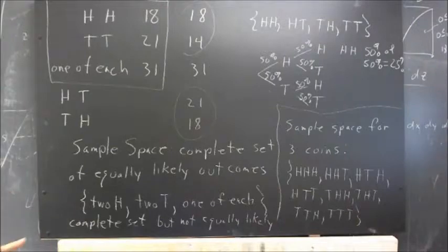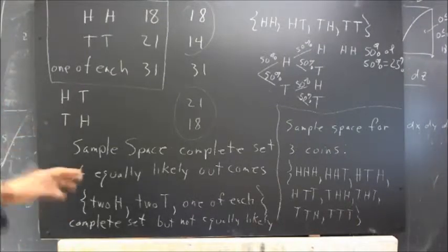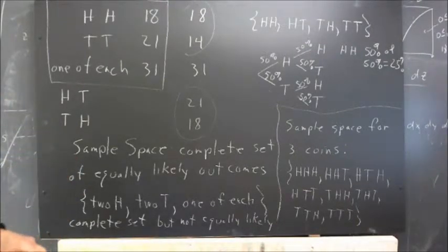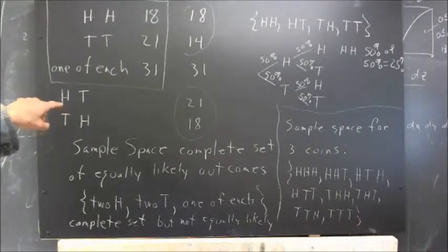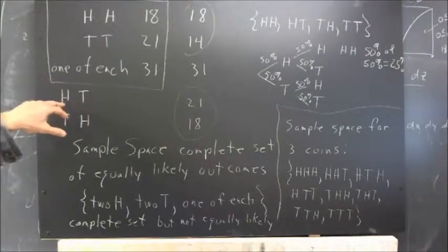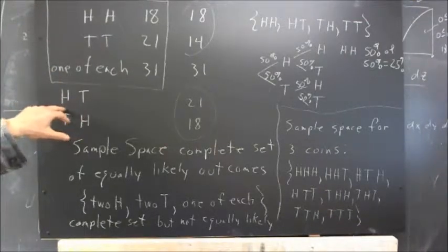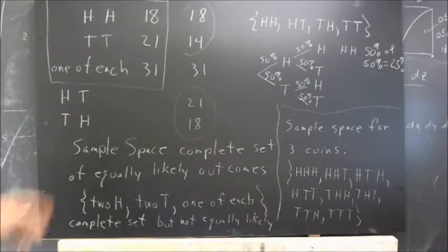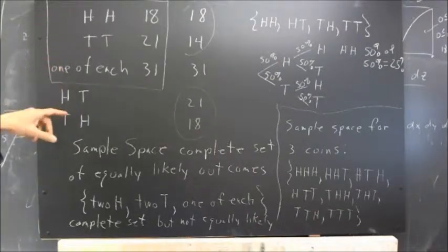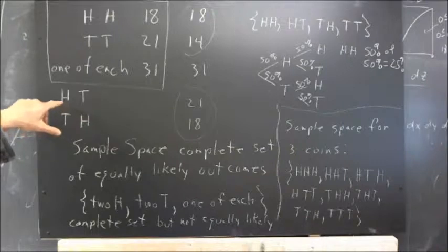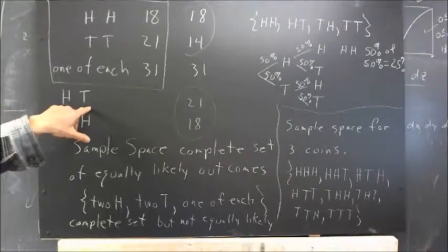We repeated the experiment, everybody using two different coins and listing the heads and tails in the same order for each pair of coins. So, for example, if you had a penny and a dime, that might be the penny and that might be the dime.